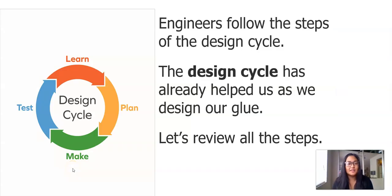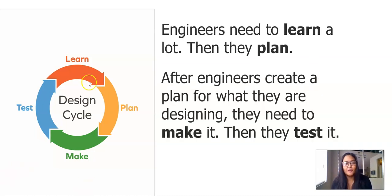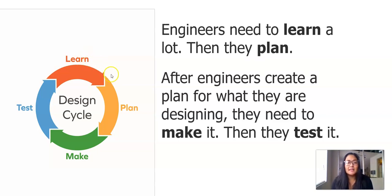You can see on the left is our poster of the design cycle. This is the steps that engineers follow. The design cycle has already helped us with the design of our glue. The first step is that engineers need to learn — whether they are reading something or observing something. The next thing they do is make a plan of what they want to design and what their goal is. After they feel confident enough about their plan, then they make it. And finally, they test it.